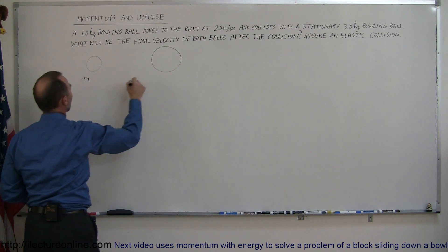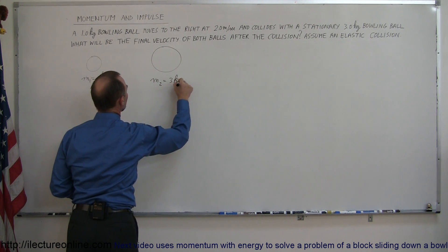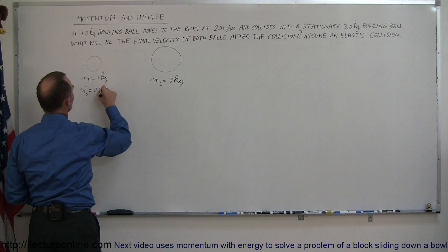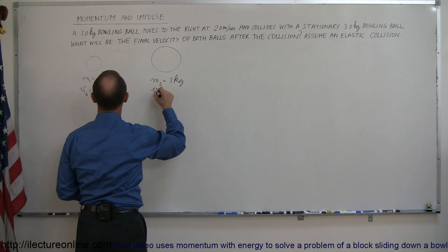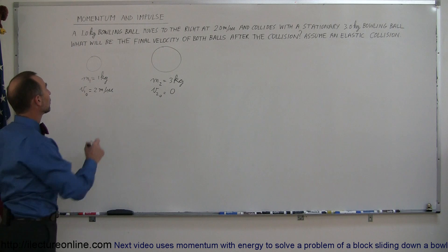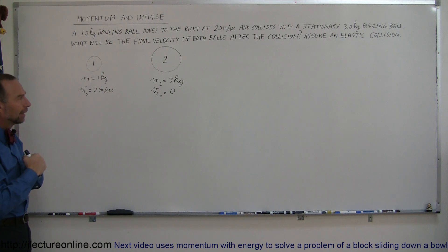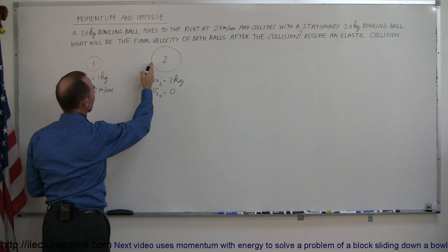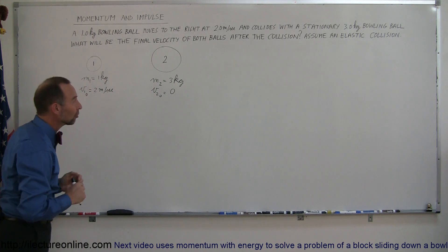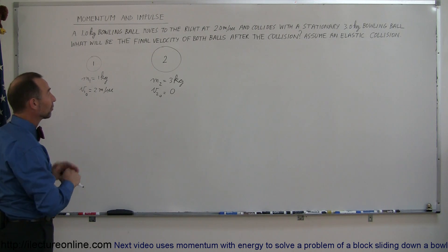Mass 1 equals 1 kilogram and mass 2 equals 3 kilograms. The initial velocity of the first ball, v1 initial, equals 2 meters per second to the right, and v2 initial equals 0. I'm assuming that the small bowling ball will collide with the big bowling ball and be pushed backwards, and the big bowling ball will be pushed to the right, but we're not 100% sure. The equations will let us know what happens by solving the problem.